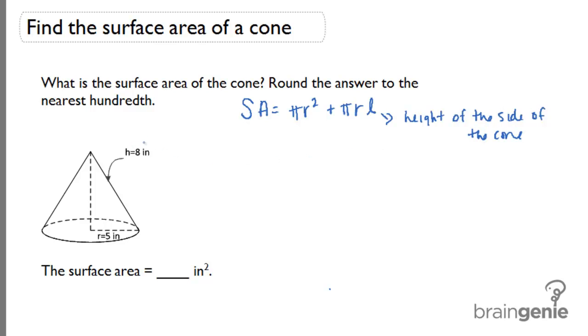In this picture right here, we have the height of the side of the cone to be 8 inches, so that's going to be our L. And the radius of the cone to be 5 inches, that's going to be our R.